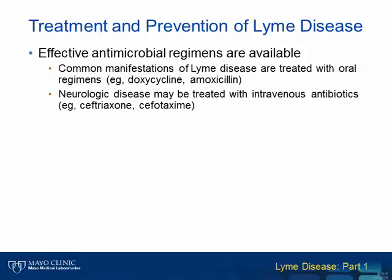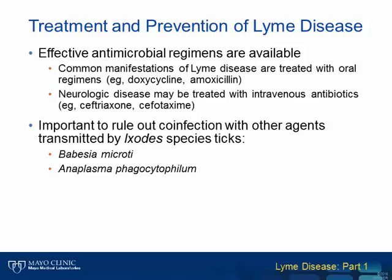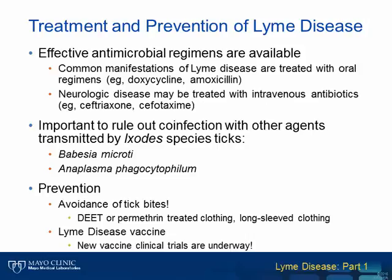To conclude, effective antimicrobial treatment regimens for Lyme disease are available and have been evaluated in clinical trials. Oral antibiotics such as doxycycline or amoxicillin are often prescribed for the common symptoms of Lyme disease, while intravenous antibiotics such as ceftriaxone are reserved for more complicated disease manifestations, including neuroborreliosis. Ixodes ticks can also transmit other infectious agents, including Babesia microti and Anaplasma phagocytophilum alongside Borrelia burgdorferi, so clinicians are encouraged to consider ruling out co-infection with these agents as well. Prevention of Lyme disease is largely dependent on avoidance of tick bites, involving use of DEET or permethrin-treated clothing when enjoying the outdoors and wearing long-sleeved clothes. While a Lyme disease vaccine was commercially available in the early 2000s, it has since been pulled from the market, and new vaccines are currently in clinical trials.